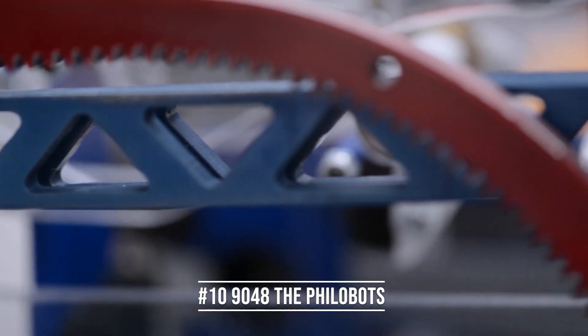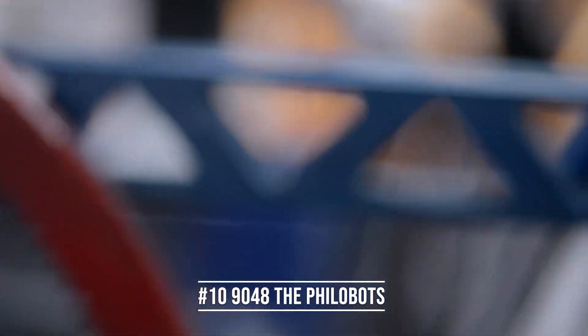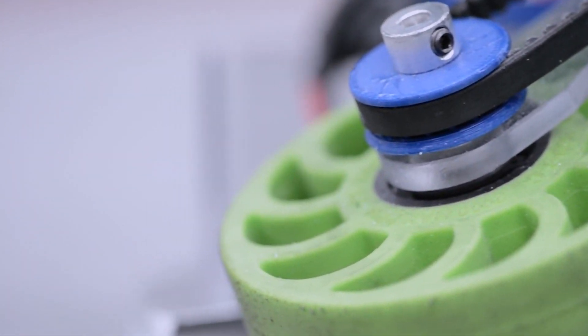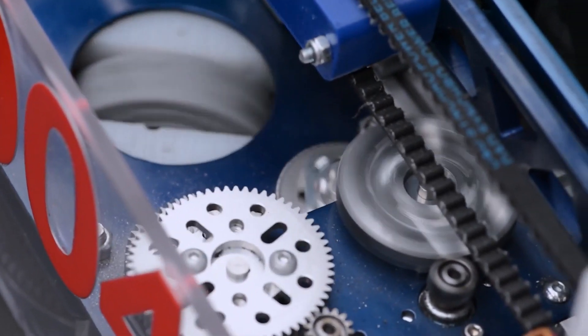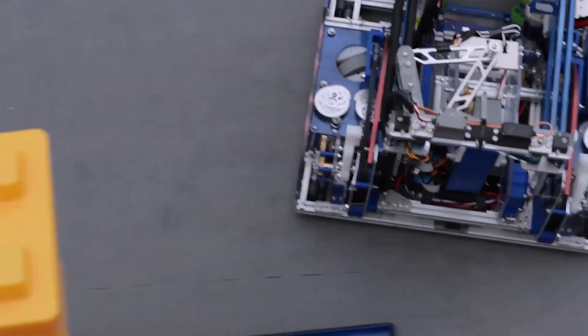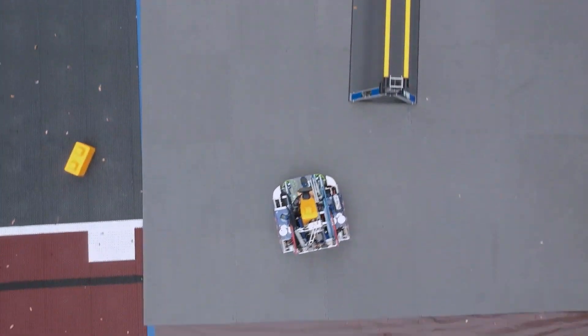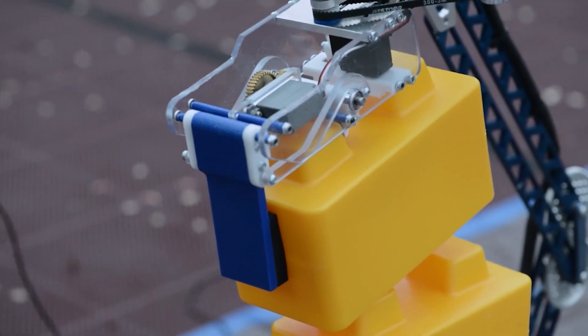The 10th best reveal of all time is from team 9048 the Philobots and the reveal from the Skystone season. This reveal starts out with beautiful montage showcasing different parts of the robot and changing the focus of the camera to showcase only small pieces. It then culminates with the reveal of the entire robot which is perfectly synced with the music. Something unique about this reveal is it was shot outside and they use some cool drone footage to get a bird's eye view of the field. Overall a solid reveal.